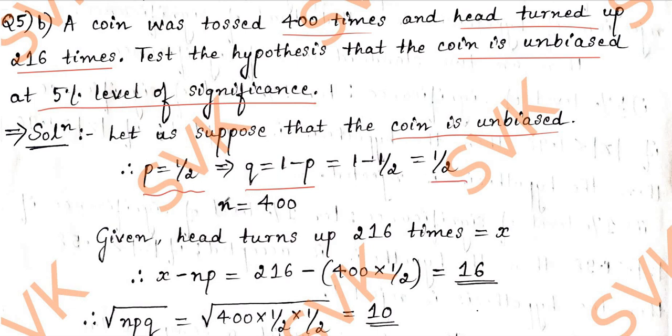After knowing the value of P and Q, given value N, that is 400 times a coin is tossed, so therefore N is equal to 400. As we are solving the problems of large sample, N is equal to 400. Given head turned up 216 times, I will consider that value as X.